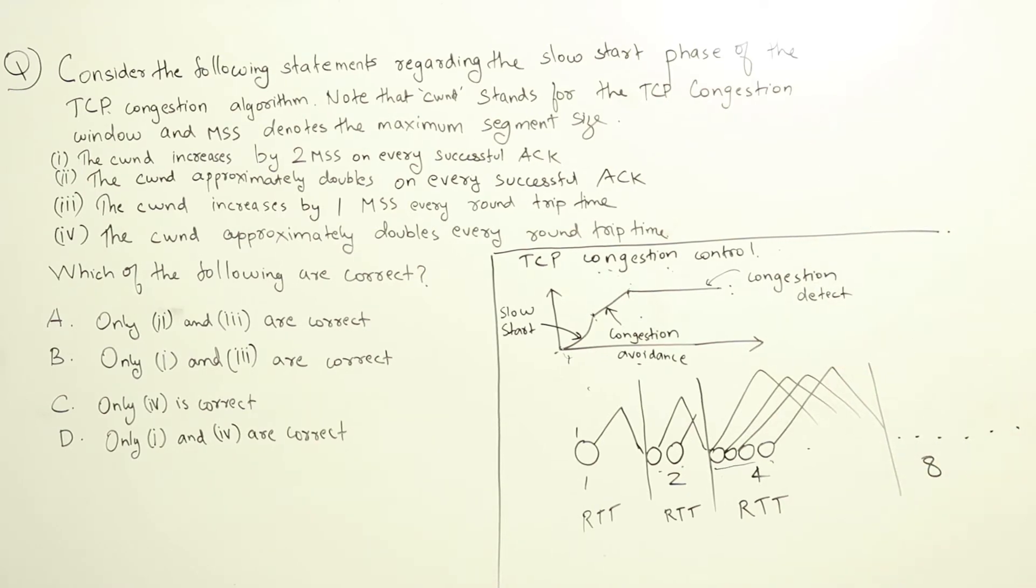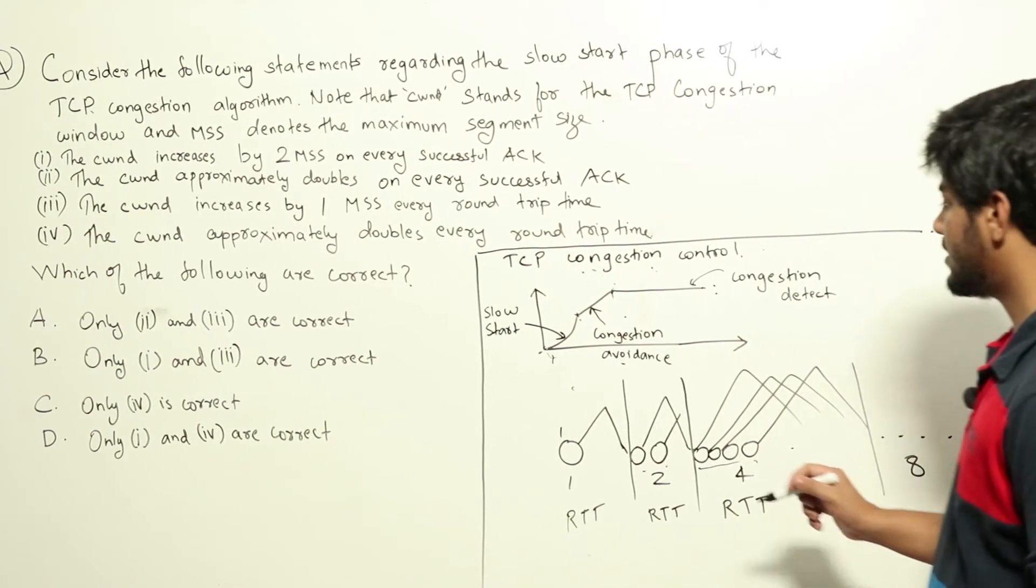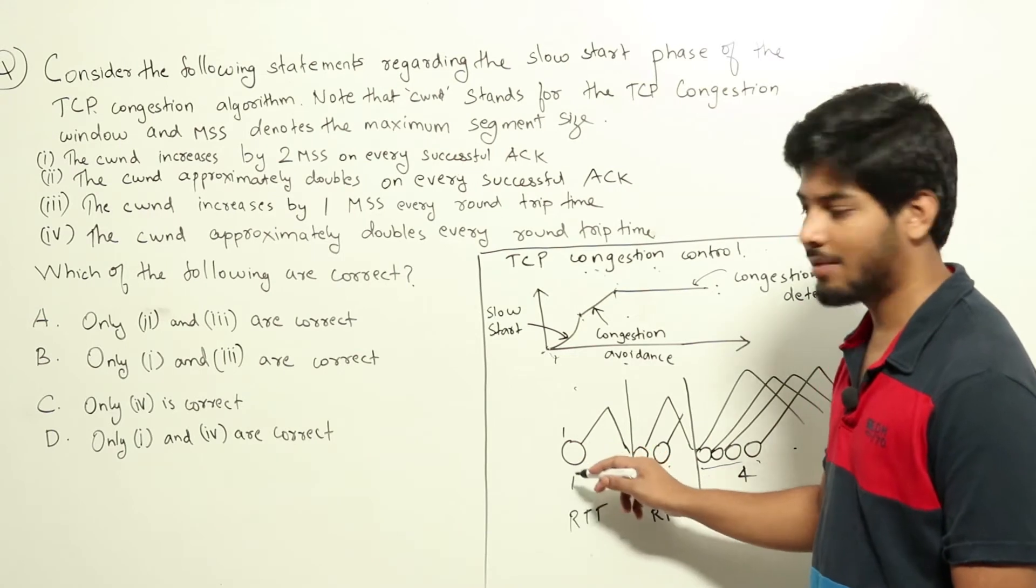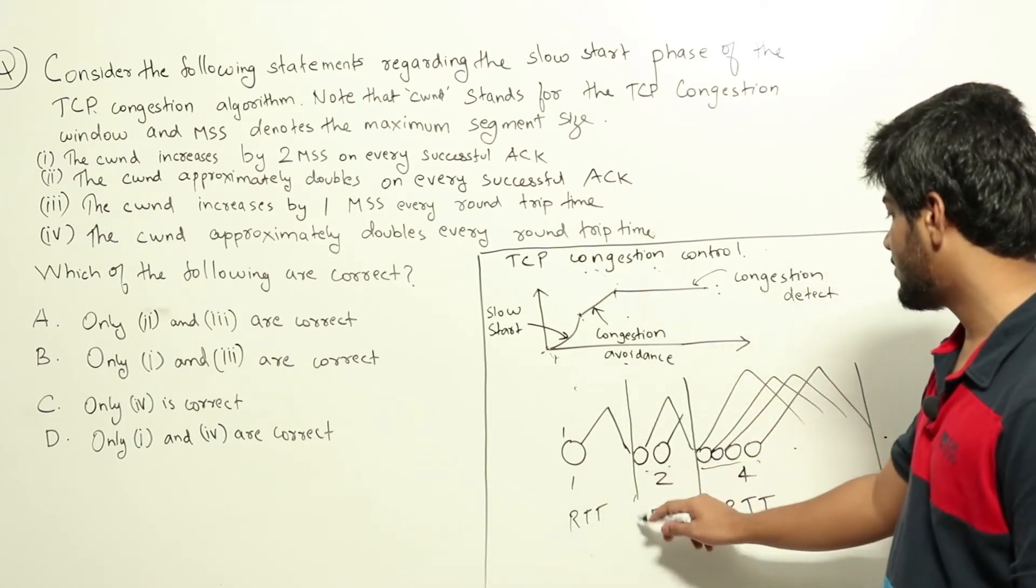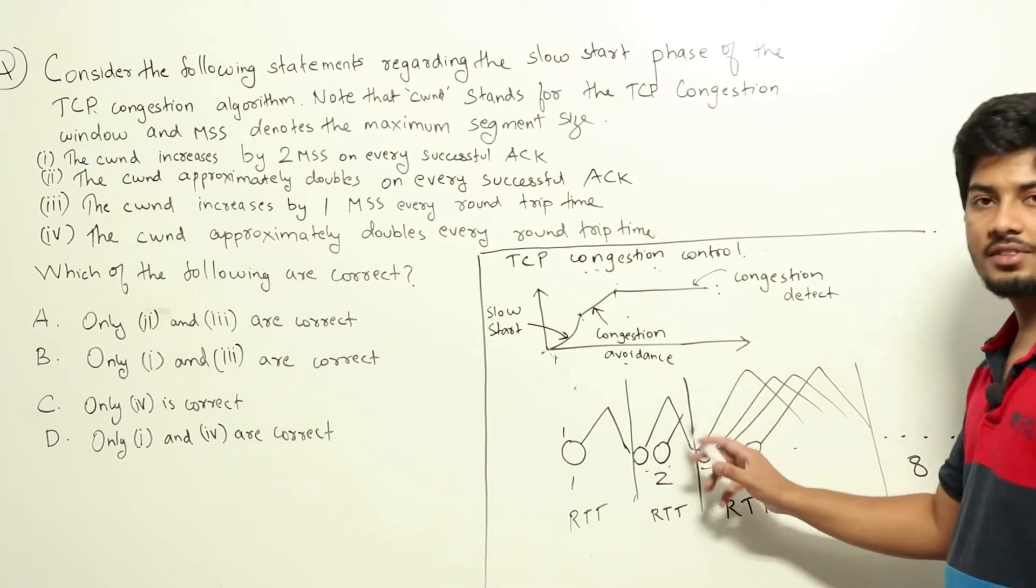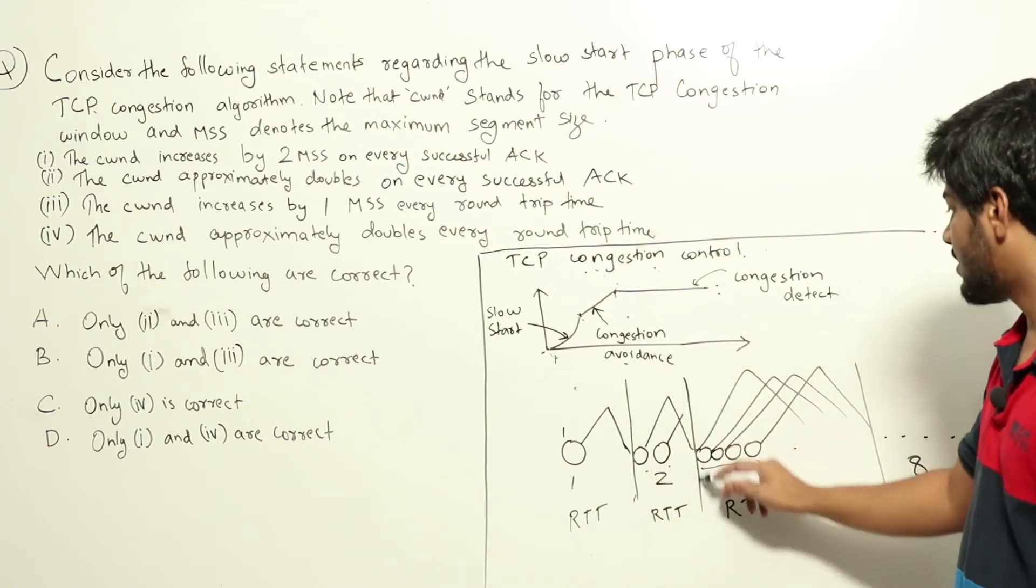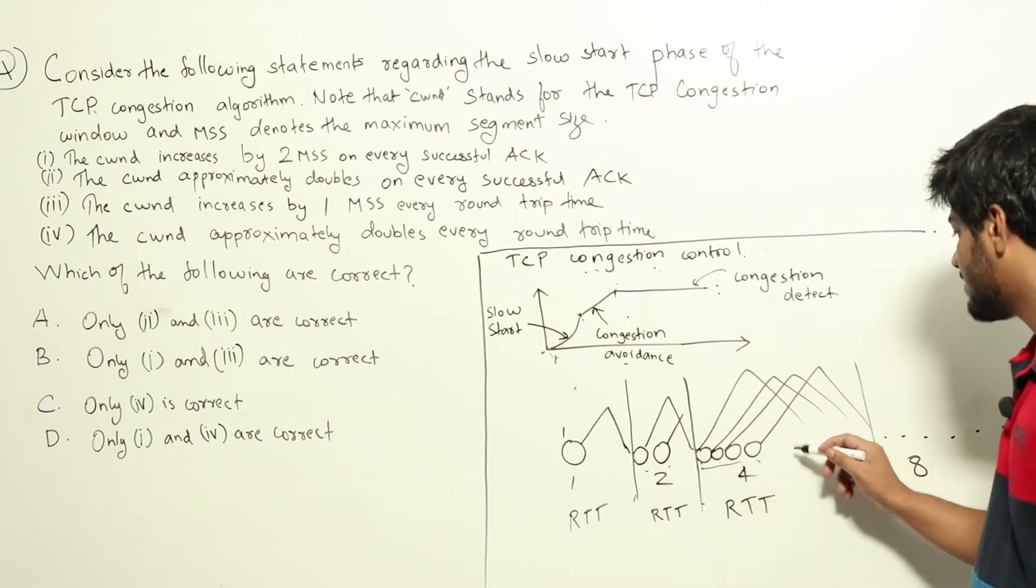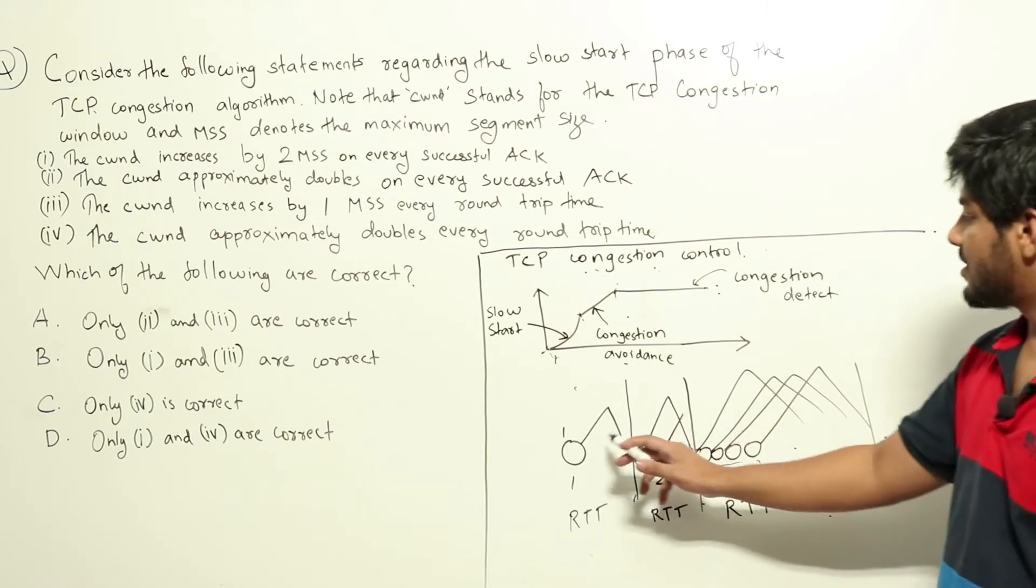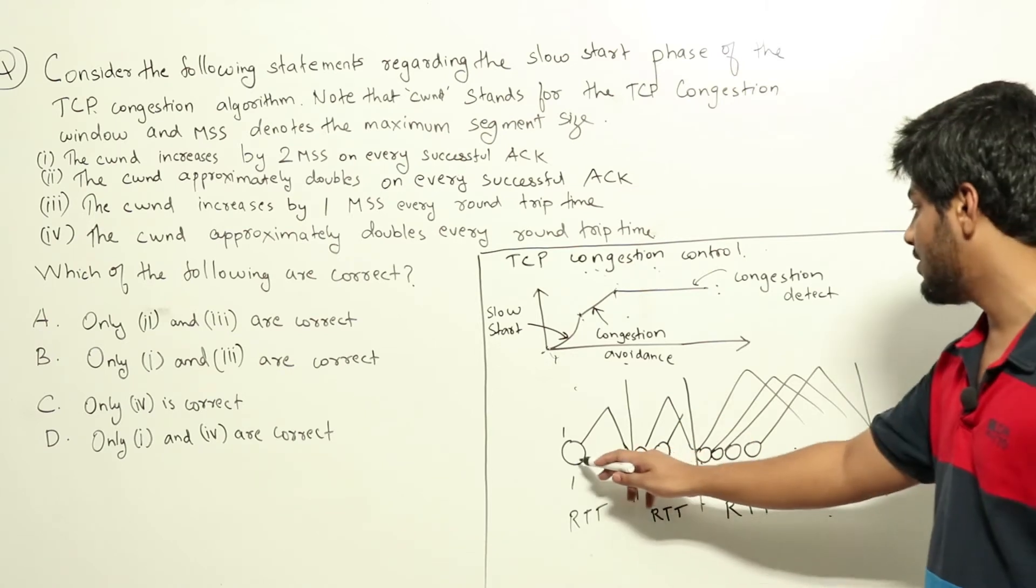So the question is about the slow start phase. How it works is initially we have one packet, that is one MSS. We will be sending that. Once we receive the ACK, after the round trip time we will double it. Then we will be sending two packets. Again after the round trip time we will be doubling it again, so we will be sending four packets here.